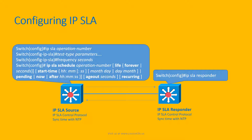The default frequency is 60 seconds. After that, we need to specify the IP SLA schedule — when it is going to run. The command is 'ip sla schedule' followed by the operation number. For the life of the schedule, we can select 'forever', meaning it runs non-stop, or we can specify a number of seconds after which it will finish. We can also specify the start time as 'pending', 'now', or after a specific time.